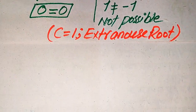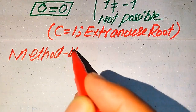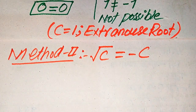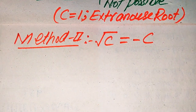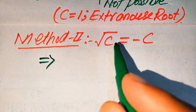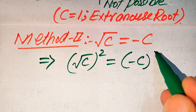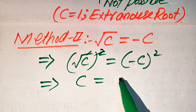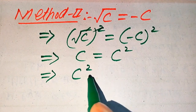Now we solve the problem using the second method. The given equation is square root of C equals minus C. In this method we use the squaring technique: we apply squaring on both sides. The square and square root cancel on the left, giving C, and the right side becomes (−C)² equals C squared. Moving C to the right hand side gives C squared minus C.